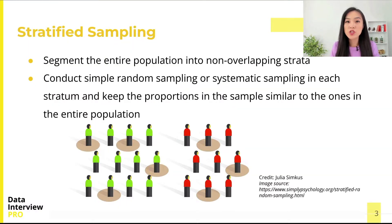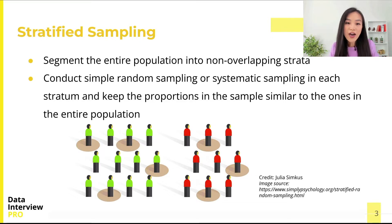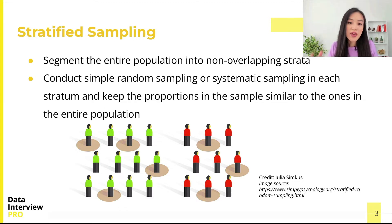Let's dive in. If your population is not a homogeneous group — meaning that it can be divided into subpopulations or strata — then you can use stratified sampling. The idea is simple: we divide the population into strata, then use simple random or systematic sampling on each stratum, making sure to keep the proportions in our sample similar to the ones in the entire population.